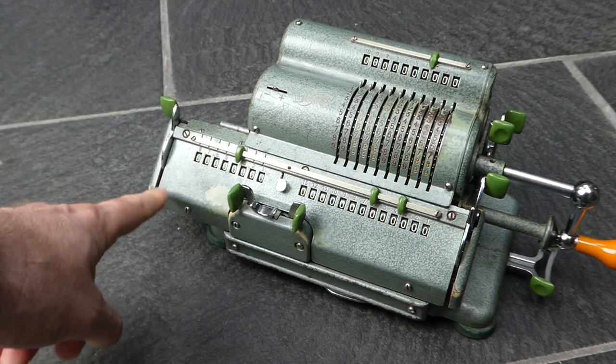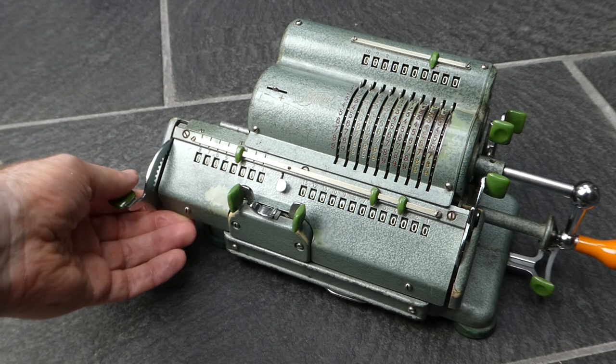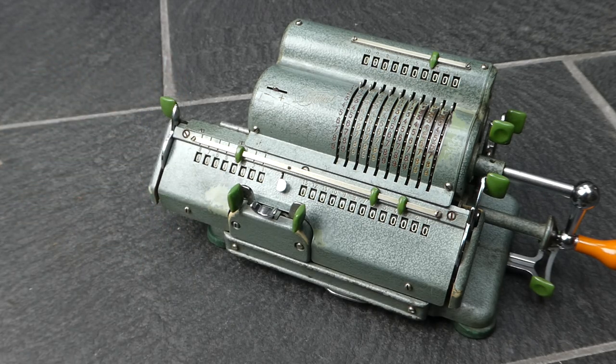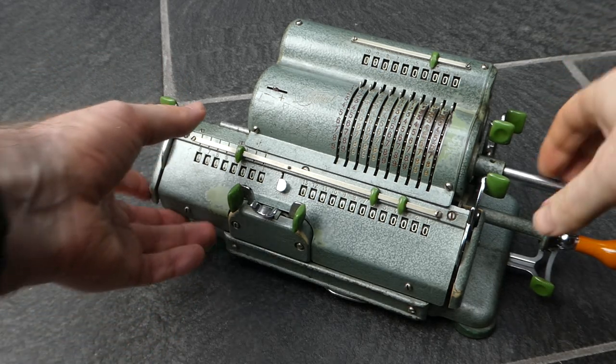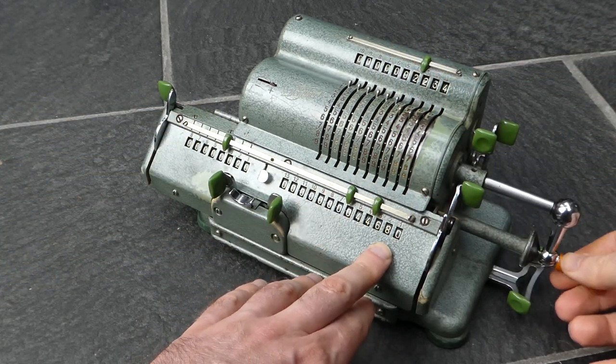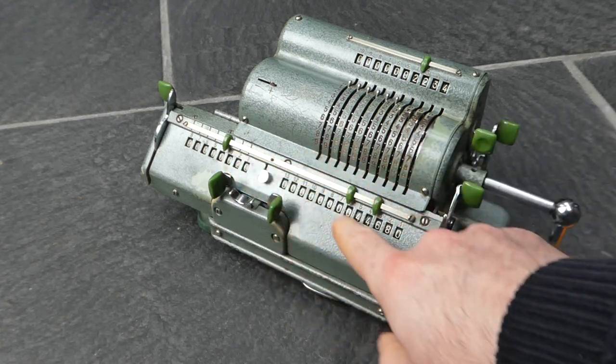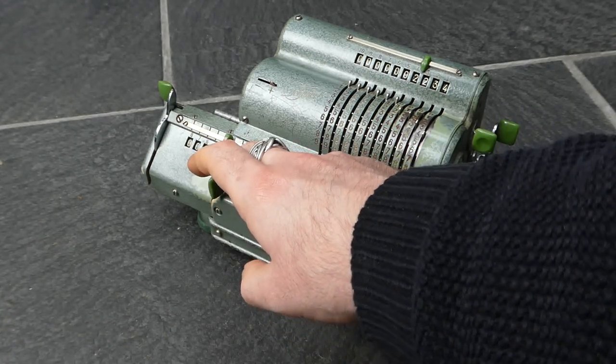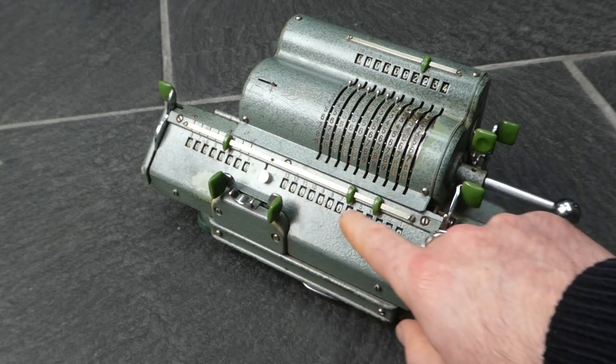The clearing lever for the counter doesn't have this, but that's not necessary. Note by the way that the clearing lever on this side actually clears both counters, both the counter register and the main register.